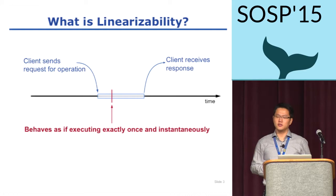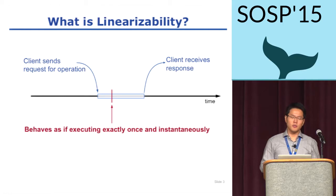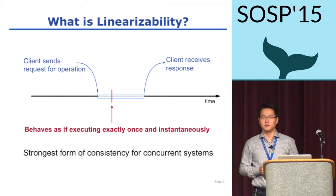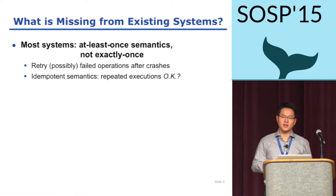An operation is linearizable if it appears to happen exactly once at some time point between when a client sends a request and receives a response. In other words, no client of the system, either the one initiating the request or other clients operating concurrently, can observe contradictory behavior. This is the strongest form of consistency for concurrent systems. However, most distributed systems today don't provide linearizability. They implement at-least-once semantics by retrying failed operations and making operation semantics idempotent.